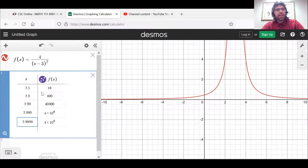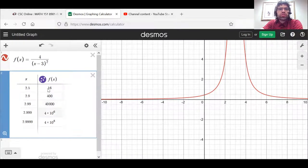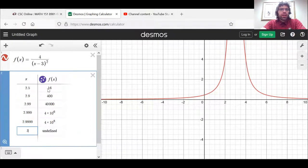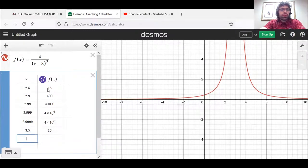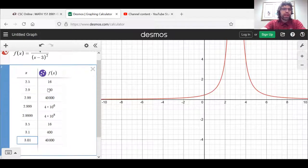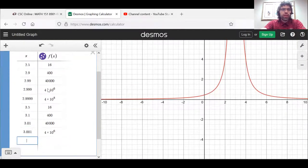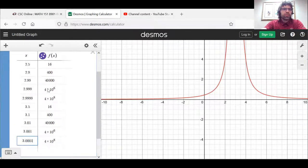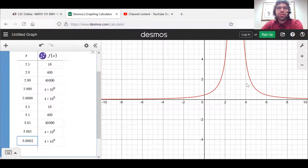And what appears to be happening is that as x approaches 3, f of x is just getting larger and larger. It's going to infinity. And that's true if we approach 3 from the right as well. The closer we get to 3, the larger f of x is getting.